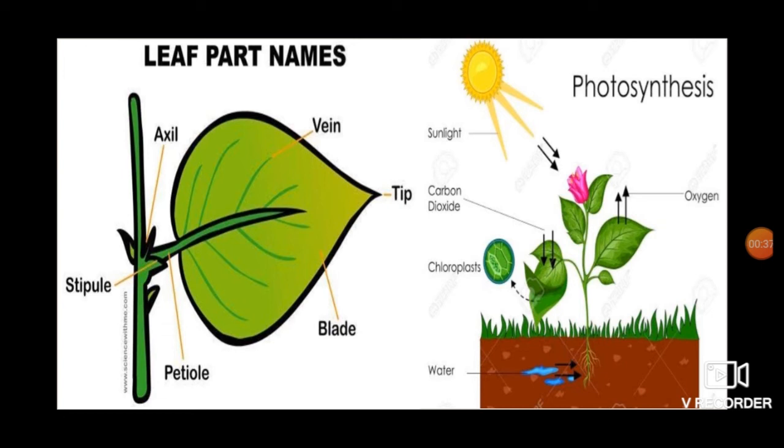Water and minerals are carried through these veins. The stalk connects the leaf to the stem or the branch. The pointed portion of the leaf is called the tip. The leaf blade has tiny holes on the underside called the stomata. The leaf takes in air through the stomata. It also gives out excess water through the stomata.